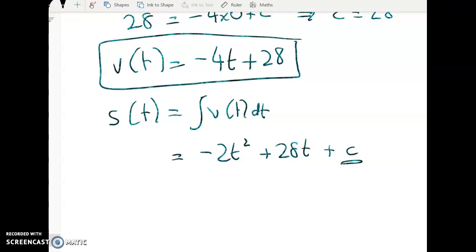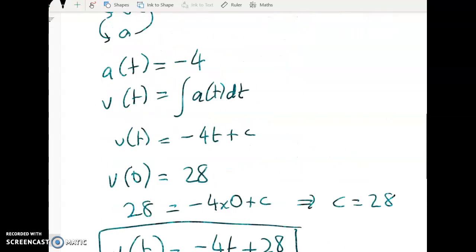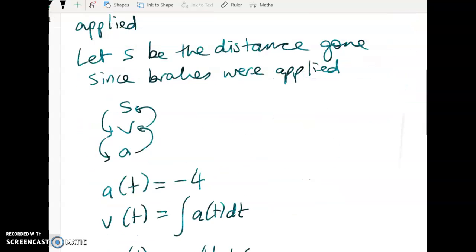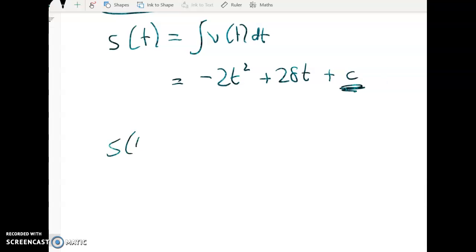And we can figure this one out pretty easily because we defined T as the time since the brakes had, T as the time passed since the brakes had applied, and S as the distance gone since the brakes were applied. So that means that S of 0 is equal to 0.